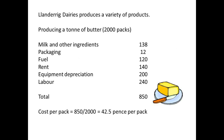Here we have a typical example of costing. A dairy is producing a ton of butter, which represents 2,000 packs. If there are no other products being produced by the dairy, then we would simply add up all of the costs for a period and divide by the units produced in that period. In this example, the total cost of 850 pounds is divided by 2,000 to give a cost per pack of 42.5 pence.